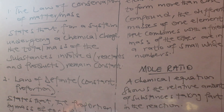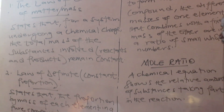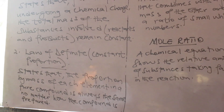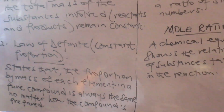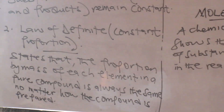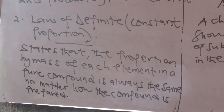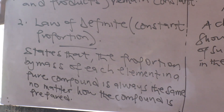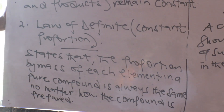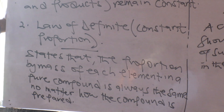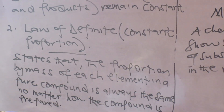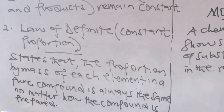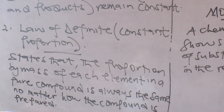Law 2: The law of definite constant proportion. It says that the proportion by mass of each element in a pure compound is always the same, no matter how the compound is prepared. So if you want to prepare sodium chloride — whether you boil it, heat it, whatever — the proportion by mass is constantly the same.